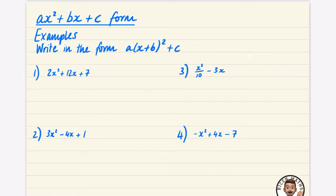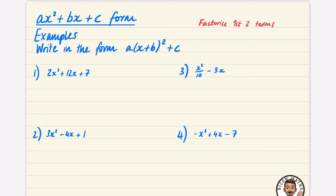In this video, we're going to be looking at quadratics where there's a number in front of the x squared — in other words, where the coefficient is not equal to one. We're going to write them in the form a(x + b)² + c. The trick for these questions is, first of all, just to factorise the first two terms, and that's going to help us do the completing the square part.